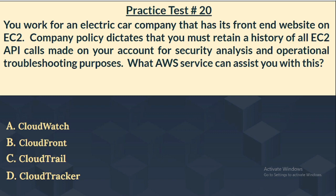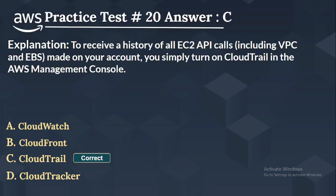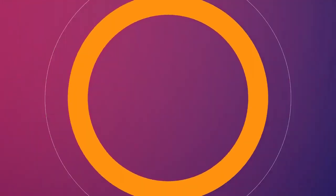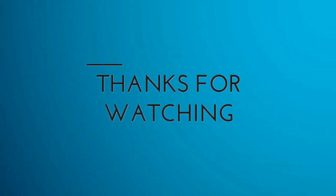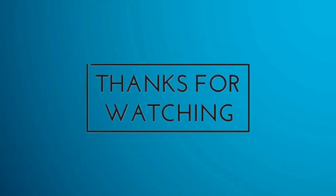The right answer is Option C: CloudTrail. To receive a history of all EC2 API calls, including VPC and EBS, simply turn on CloudTrail in the AWS Management Console. If you have any questions or doubts, feel free to ask in the comment section below. Thank you for watching — bye and have a nice day.